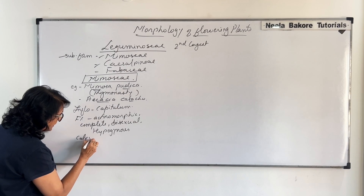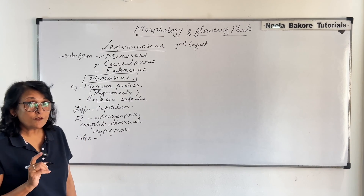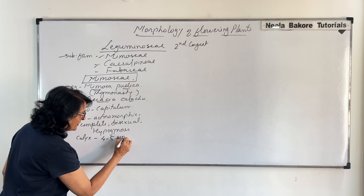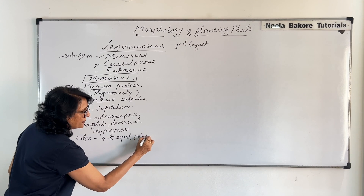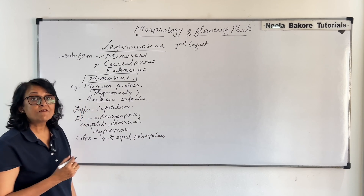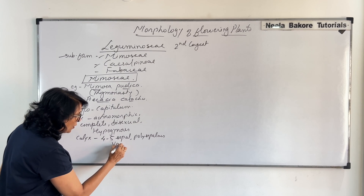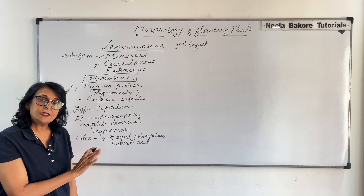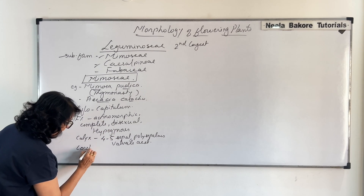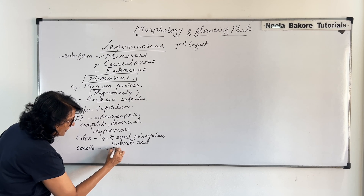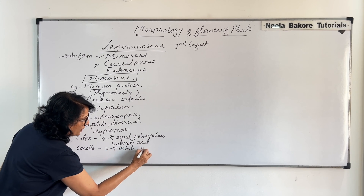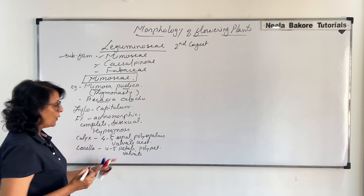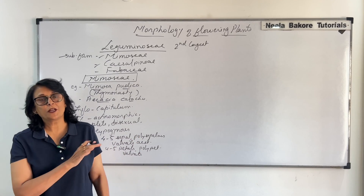The outermost whorl is the calyx. The number of sepals is four to five, and they are polysepalous — that means free — and show valvate aestivation. The same thing is seen in the case of the corolla: four or five petals, polypetalous, and valvate aestivation. So in sepals and petals, pretty much everything is the same.